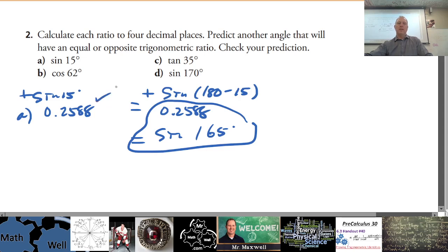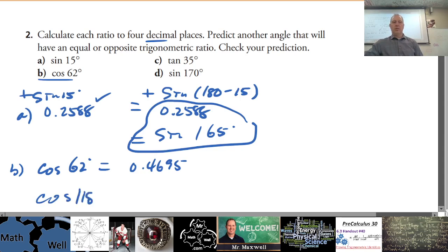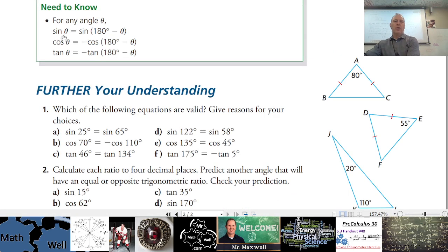We have the calculation to four decimal places and the prediction of another angle with equal or opposite ratio. It says 'or opposite' because for part b, cosine of 62 — the value is approximately 0.4695. What's 180 minus 62? That's 118. Should cosine of 118 be identical to cosine of 62? No — same number but negative. Cosine is positive for an acute angle but negative for its supplement.